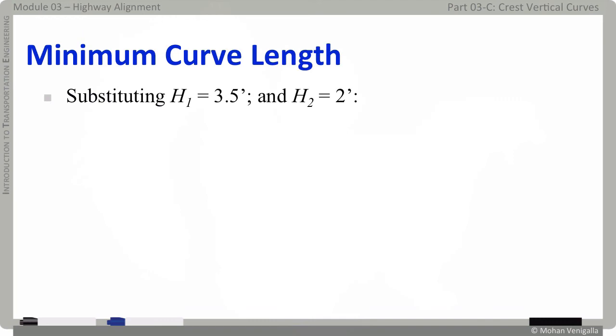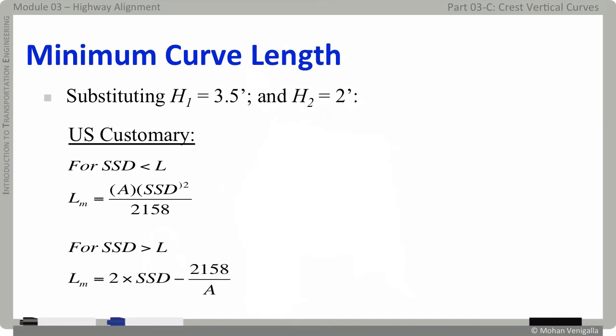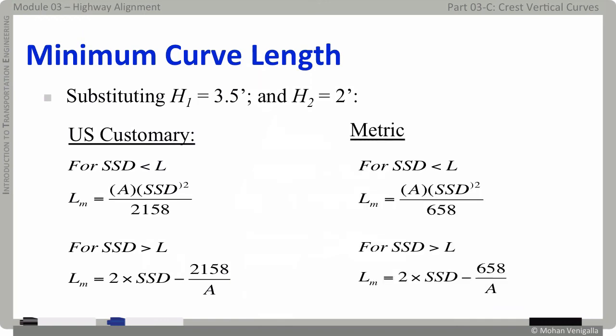Substituting 3.5 feet for H1 and 2 feet for H2 into previous two equations, for SSD less than L length of the curve, the minimum length of the crest vertical curve in US customary units becomes this equation. And for SSD greater than L, the equation for minimum length becomes this. And if you are a metric person, there is always one in the family, these two equations are just for you. As far as I am concerned, it is enough for you to understand the logic behind the derivation of these equations. And you should be able to use each equation at least once to see how these equations work. And be my guest if you want to derive them for yourself or even memorize them.